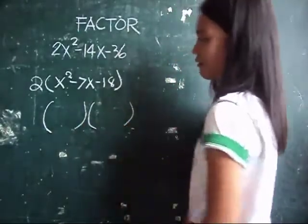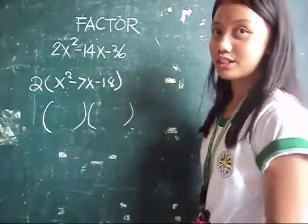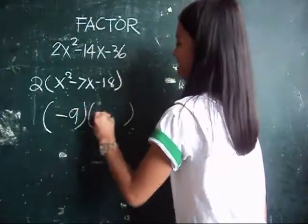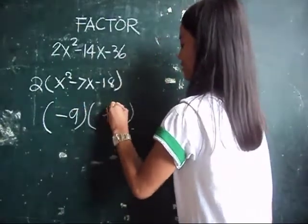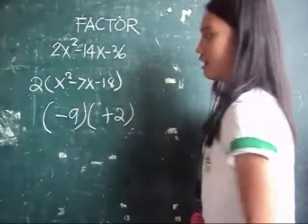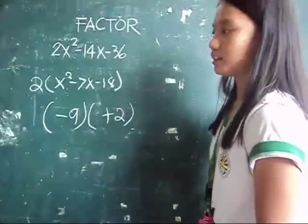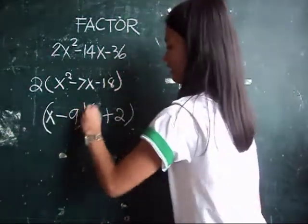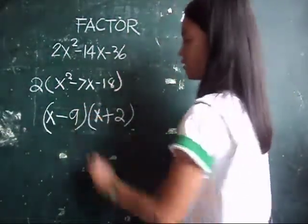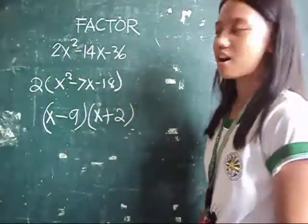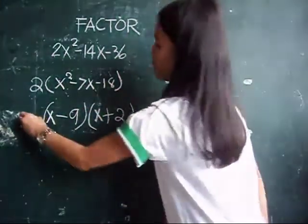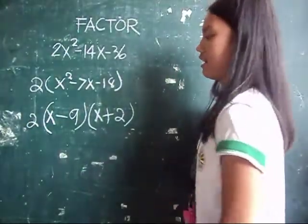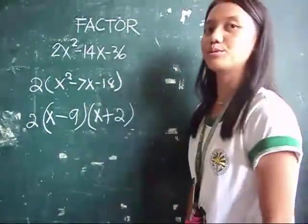First factor 18: 9 and 2. And factor x squared. So the factors are 2, x minus 9, and x plus 2.